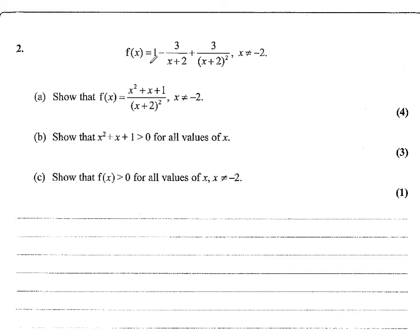We're given a function of x as three separate fractions, or at least a number and two other fractions. We're told x can't be minus 2, and then we're told to show that f(x) equals this. So basically that means put it all over a common denominator. So 1, we put over the common denominator x plus 2 squared, so 1 is x plus 2 squared over x plus 2 squared.